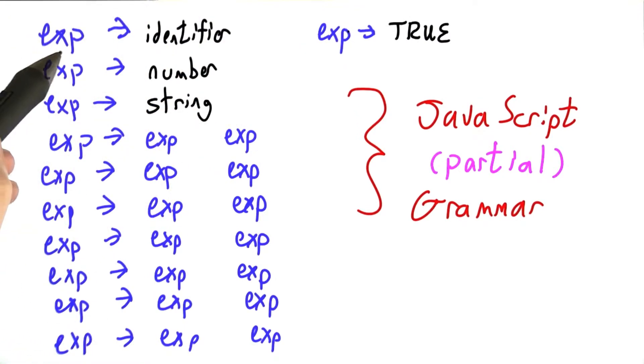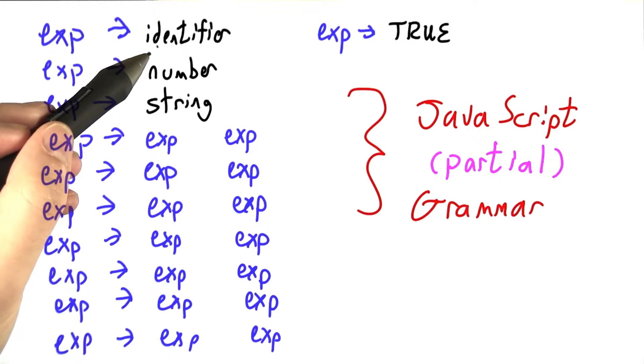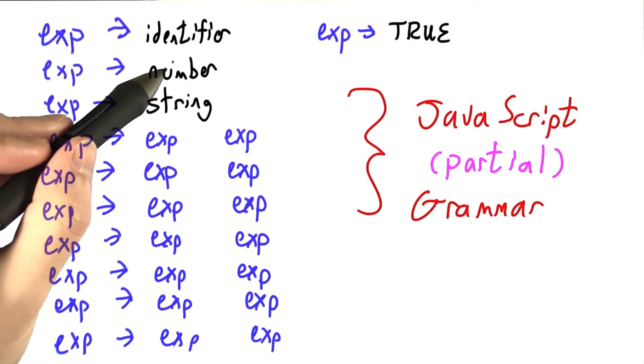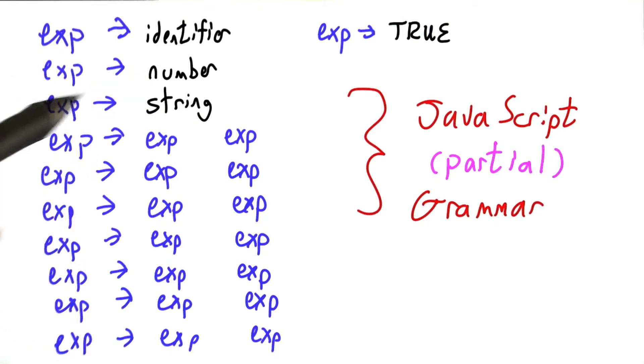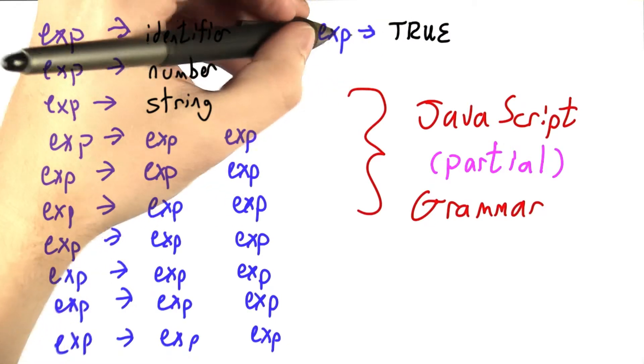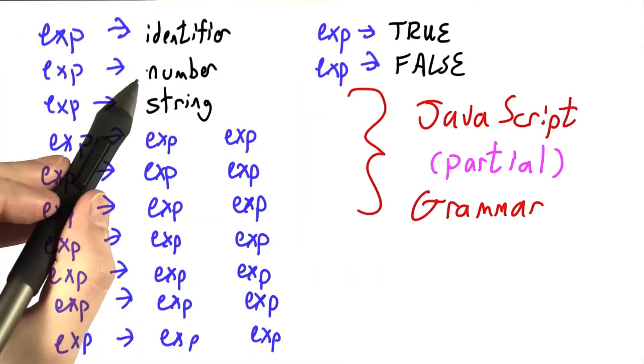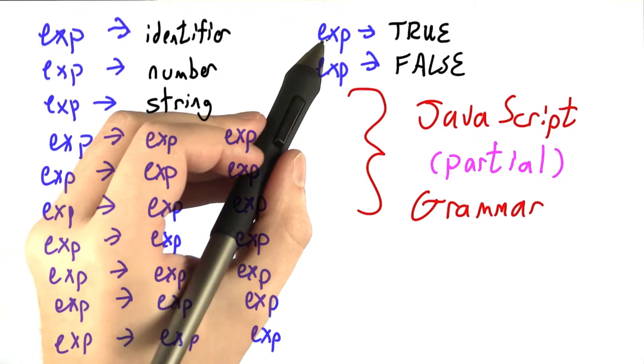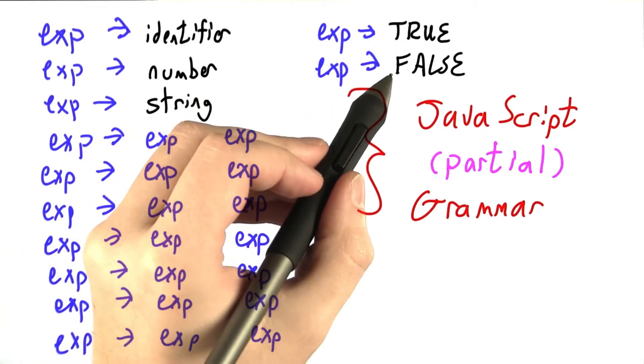An expression can either be an identifier, like a variable name x, or a function like sine or absval, a number, 1, 3.5, negative 2, a string, like hello in quotes, literal constants, like true or even false. These are the equivalent of numbers, but for the Booleans, there are only two numbers, true and false.